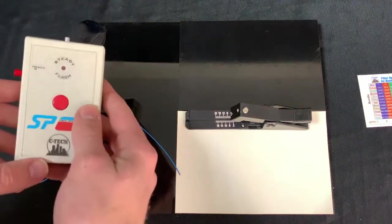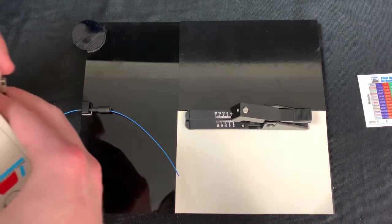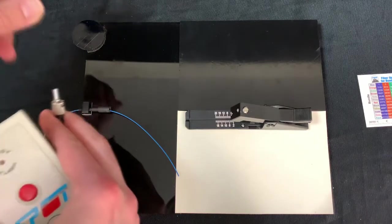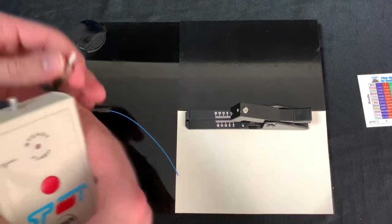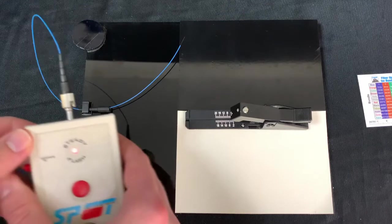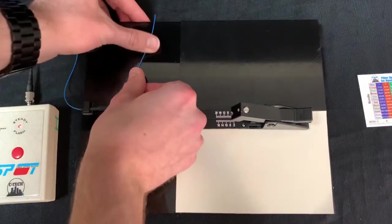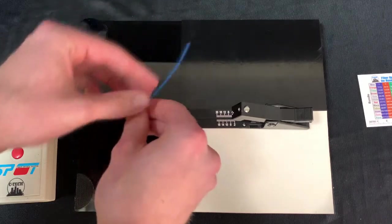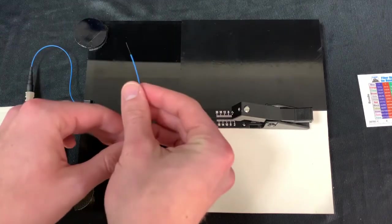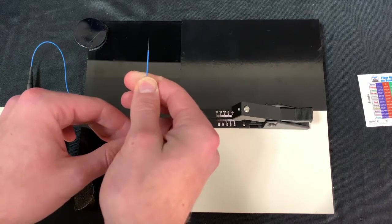Next we're going to test for the lighthouse effect using our spot. While spinning the cable around, you want to make sure that no light is coming from the sides and all light is being transmitted through the tip of the fiber.